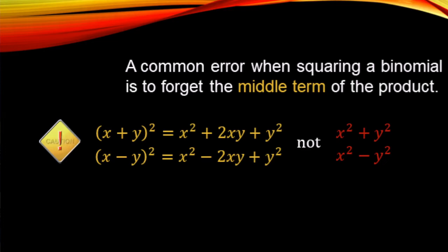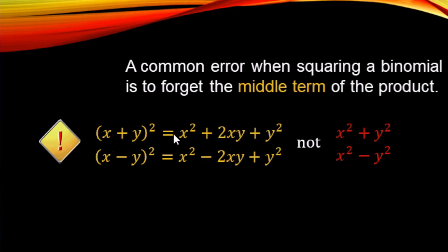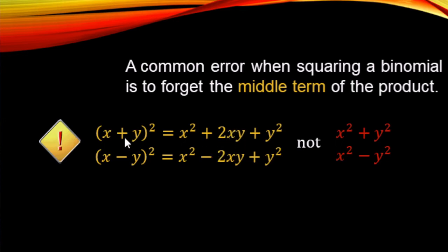The common error with this is forgetting that middle term. Most people remember x squared and y squared, but the middle term people forget about. So we don't want to forget that — multiply whatever numbers are in the first and last positions, multiply the two numbers and double them, whether it's a plus or a minus there.